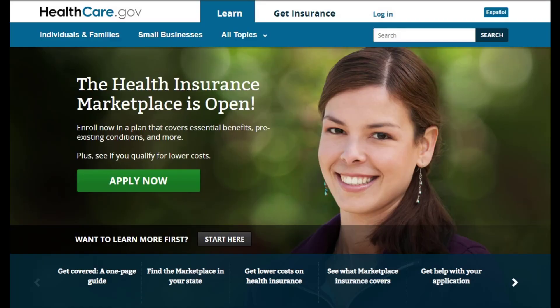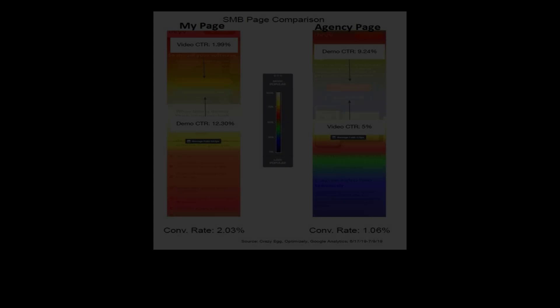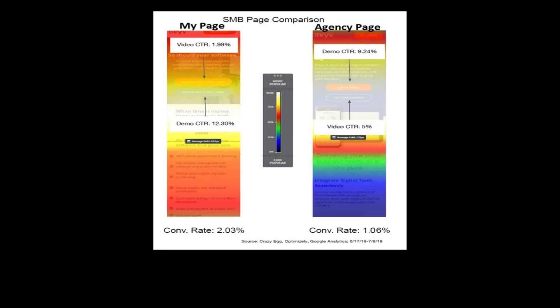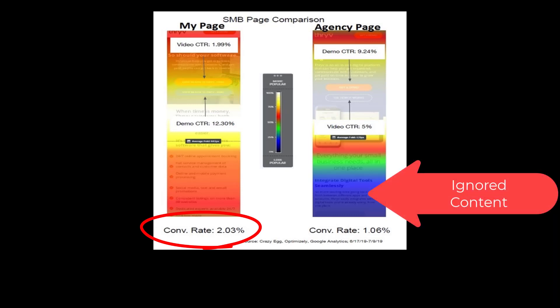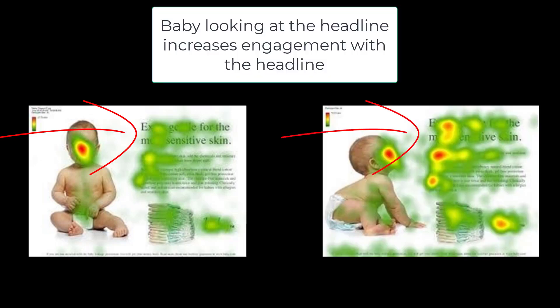Even the images you use will either help you grow your online customer base or repel them. We can easily see this with heat maps and how people look at your marketing material. Images can lead people to read more of your content or ignore it and bounce from your page. Common wisdom is to have a smiling woman look at your potential customer — basically looking back at them on the page — but in testing, this pulls eyes away from the marketing message and lowers the conversion rate. However, having that same model look at your headline or key marketing concepts actually increases conversions.